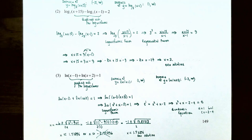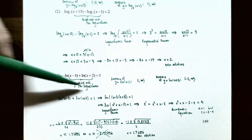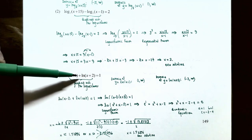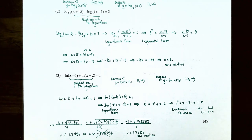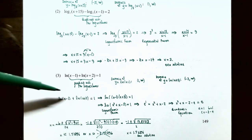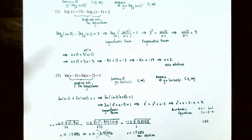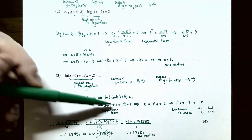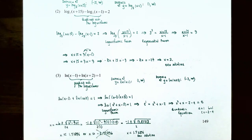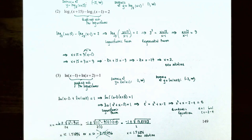Problem 3: solve ln(x−1) + ln(x+2) = 1. Two natural logarithms are being added on the left, so use the product rule: ln((x−1)(x+2)) = 1. Using FOIL gives ln(x²+x−2) = 1. This is logarithmic form with a constant on the right, so convert to exponential form.